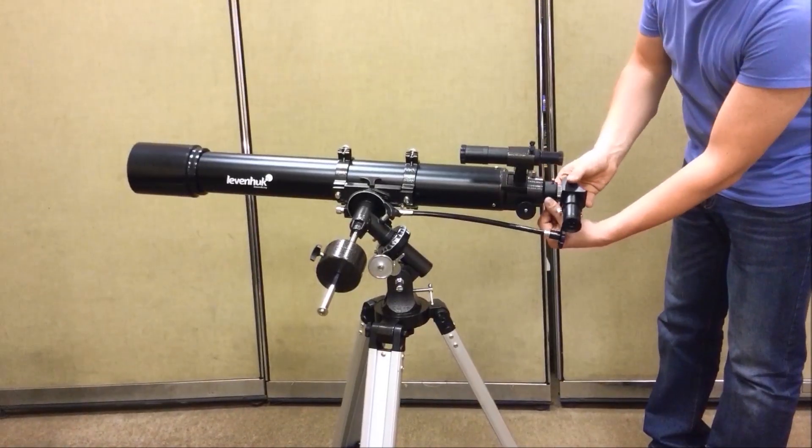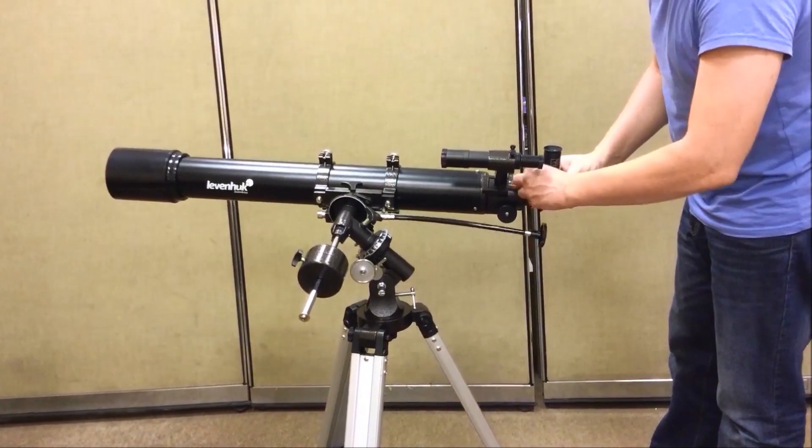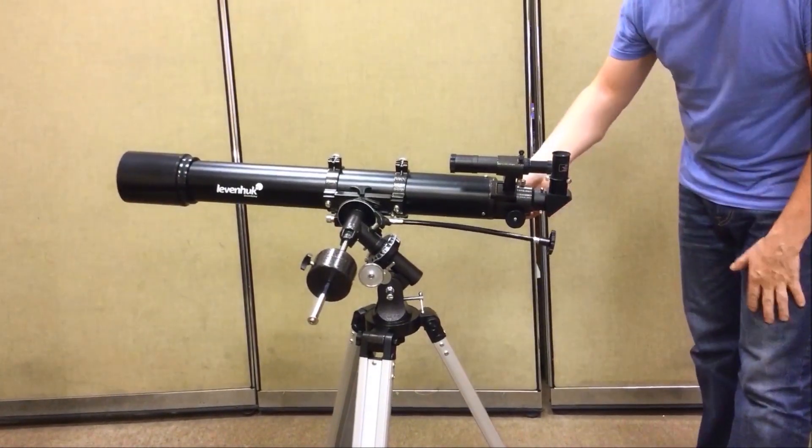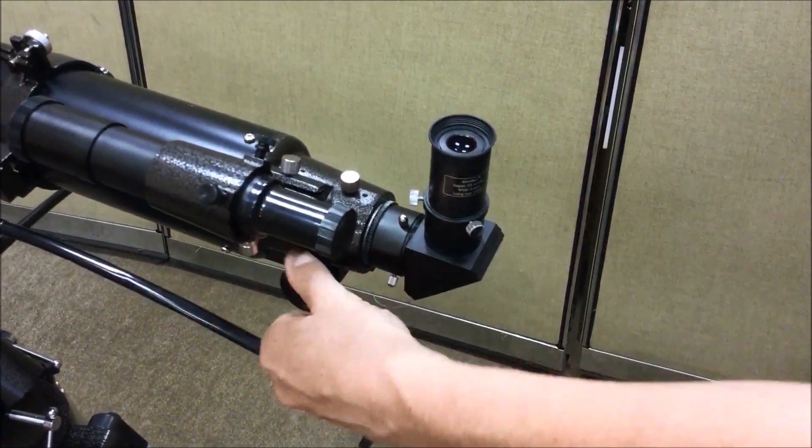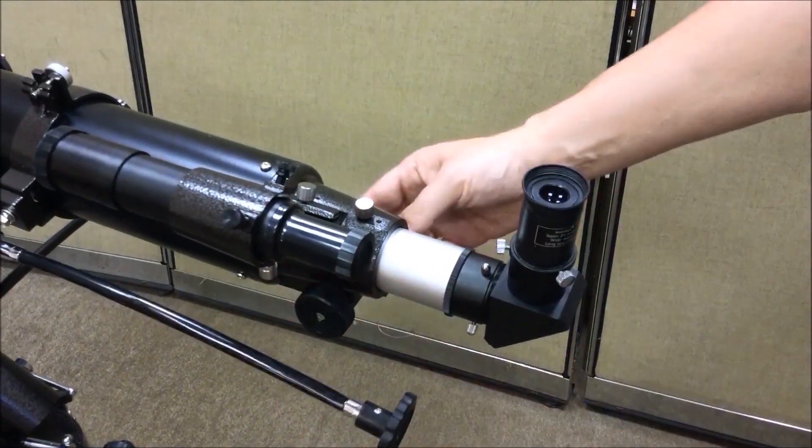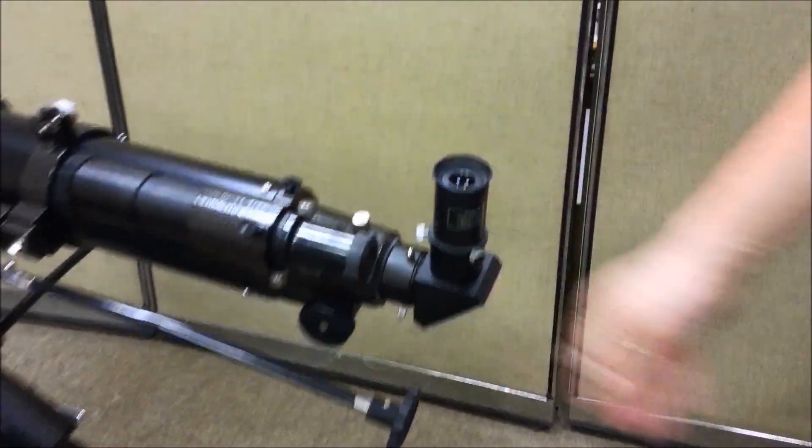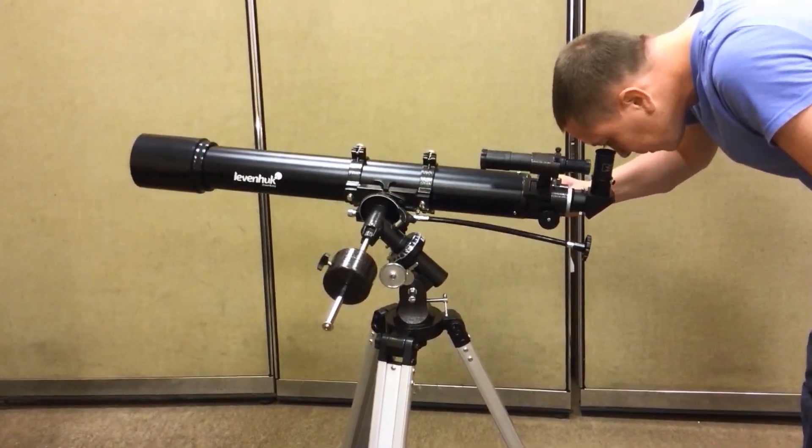Rotate the diagonal mirror until the eyepiece is perpendicular to the ground. This is the right position of the telescope. Now we need to find an object and point the telescope. Use two focusing knobs to get a clear, sharp image. The telescope is ready to use. You can start your observations now.